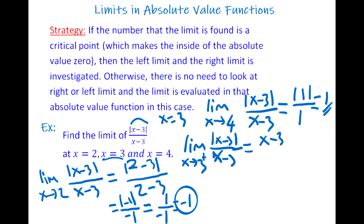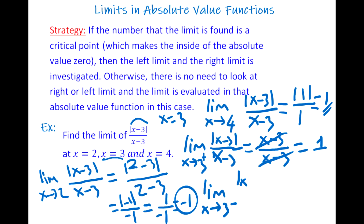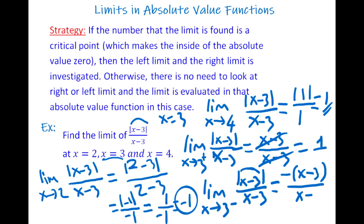From the right: |x − 3| = (x − 3), so (x − 3)/(x − 3) = 1. From the left, x approaches 3 with values like 2.99 — the inside of the absolute value is negative, so we put a negative in front: −(x − 3) / (x − 3). These cancel, leaving −1.